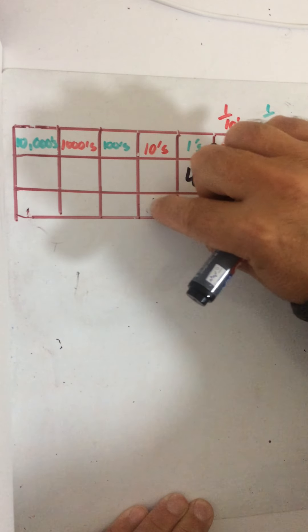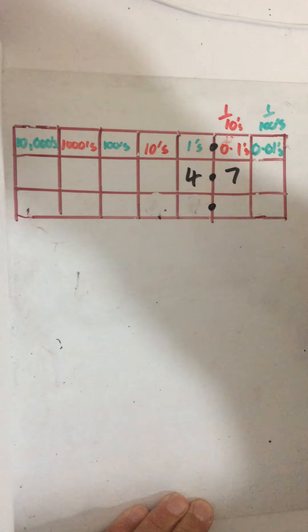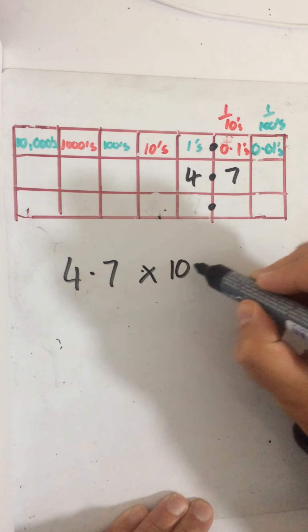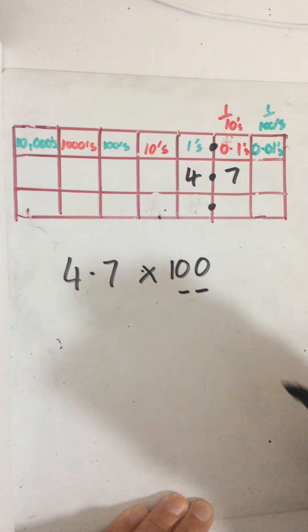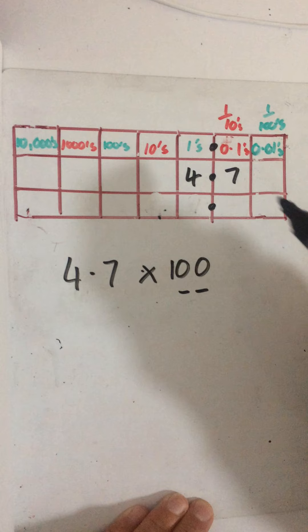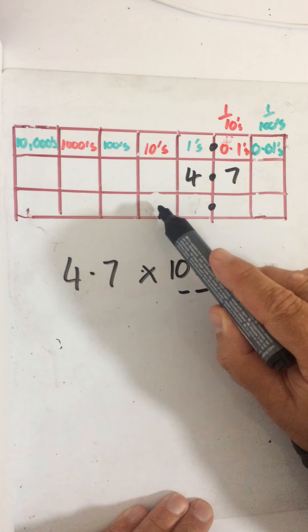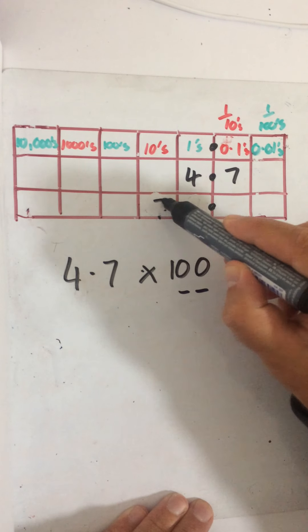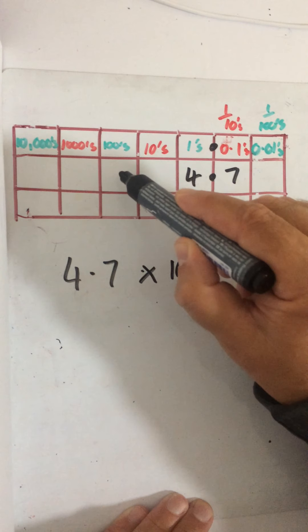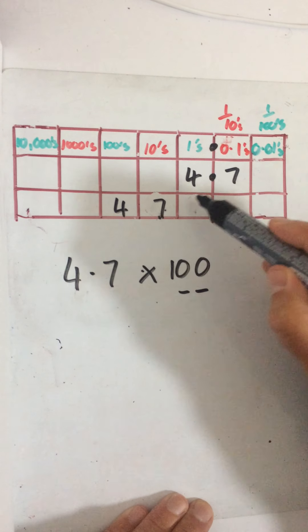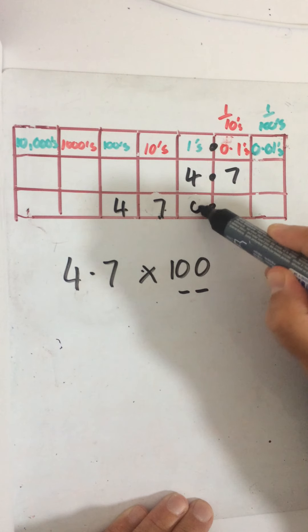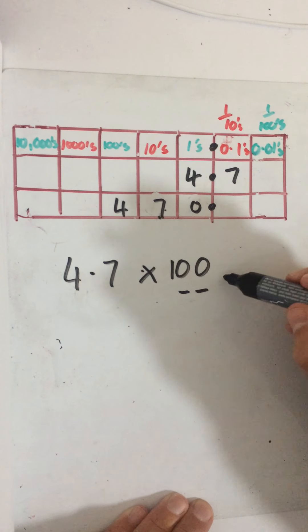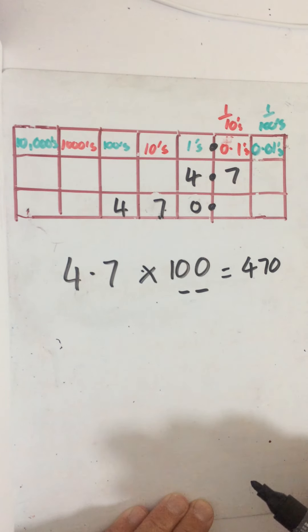Now if I had that same number, 4.7 times 100 — 100 has two zeros, so I'm going to move it two places to the left. The seven moves one, two places to the left, and the four moves one, two places to the left. I need to put in a zero in the ones column, because I've got 470. So that becomes 470.